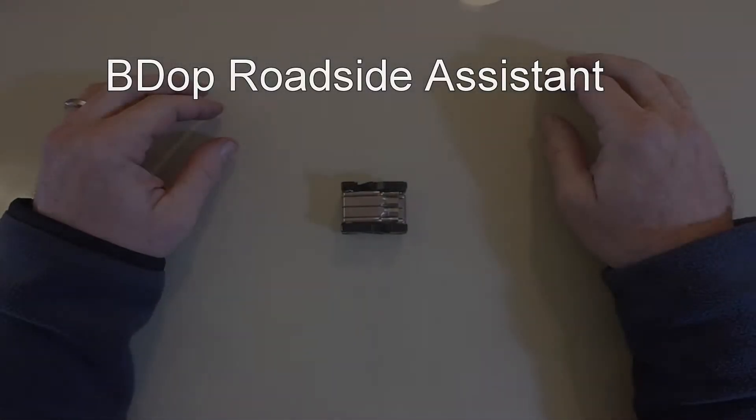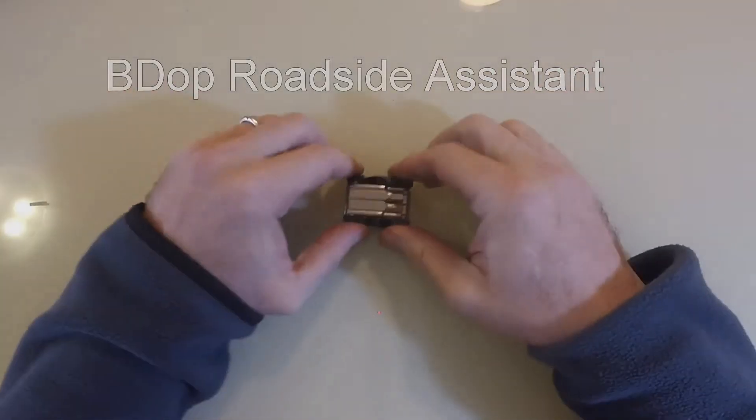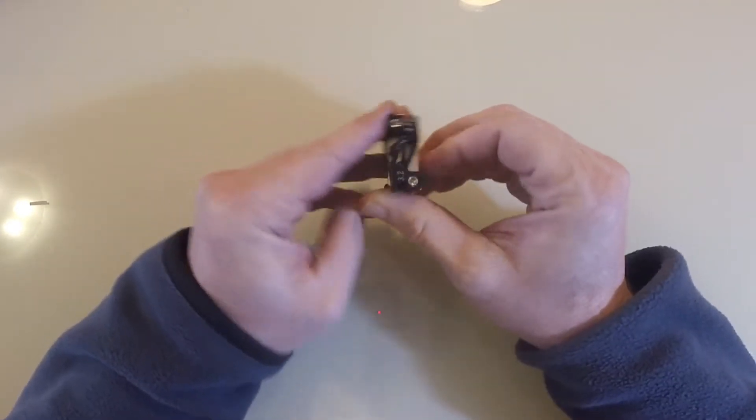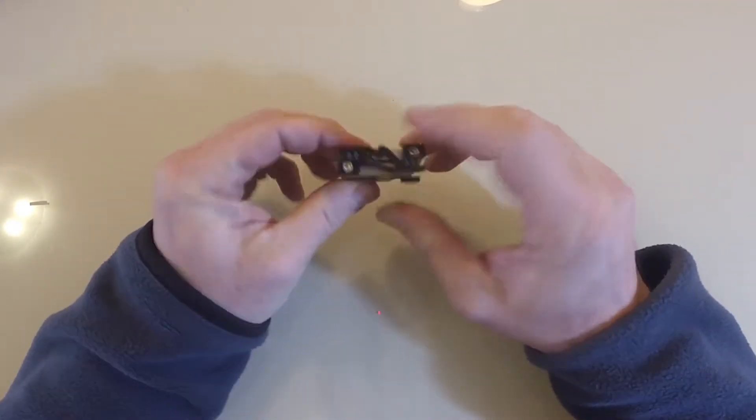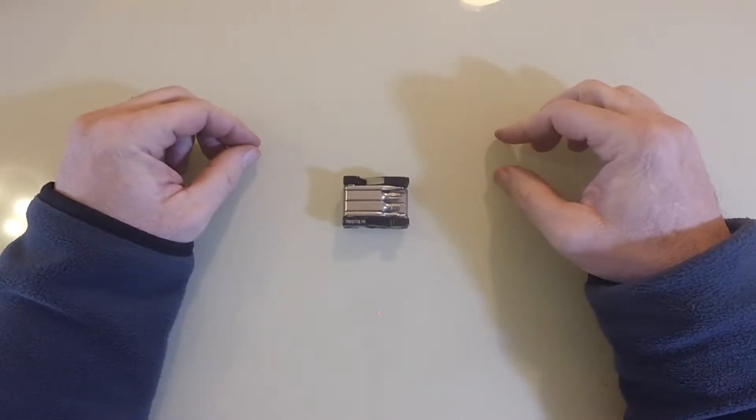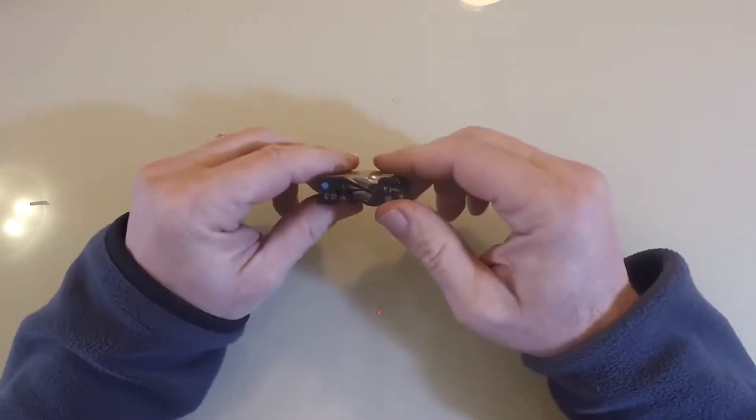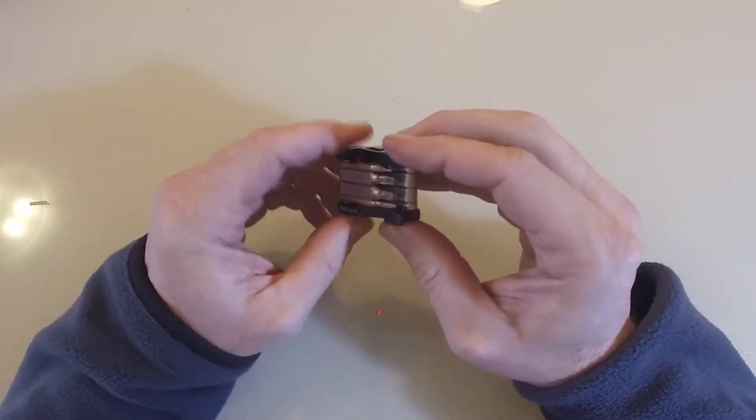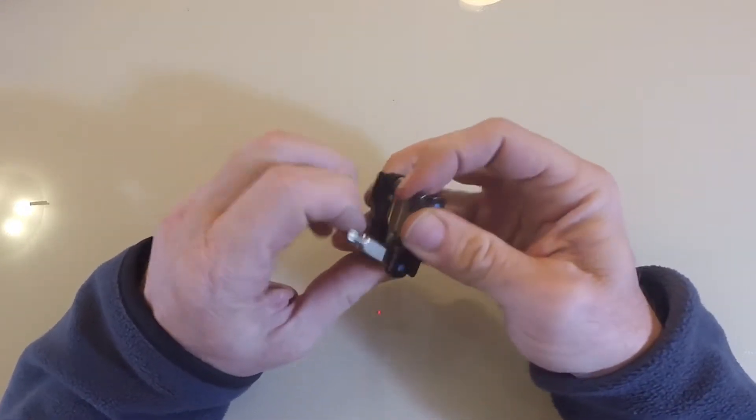Hi, this is Timothy and we're here today to talk about the BDOP Roadside Assistant mini tool. You can see it's a very small tool, just weighs 70 grams, but it still has 12 tools inside. All of the essential stuff that you need for basic roadside service and repair.